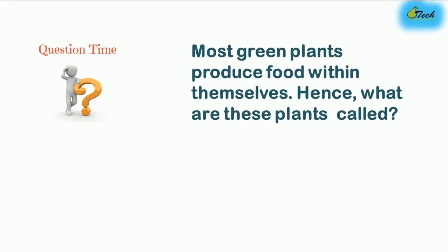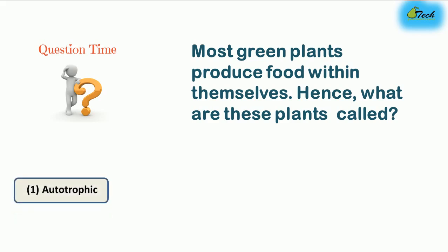Here's a question: most green plants produce food within themselves. What are these plants called? Green plants create their own food — let's see the answer. The answer is autotrophic.